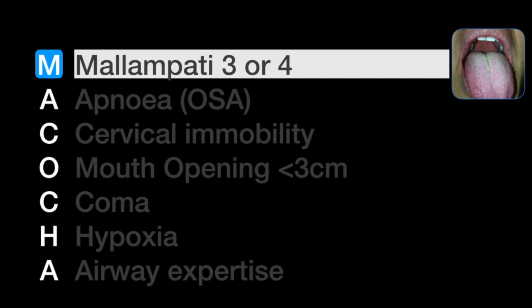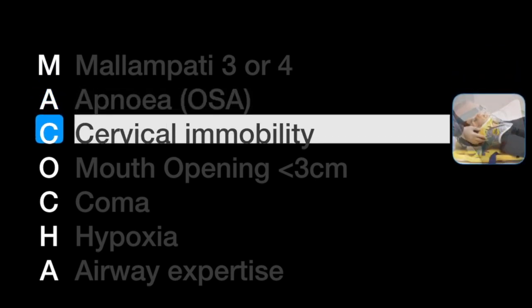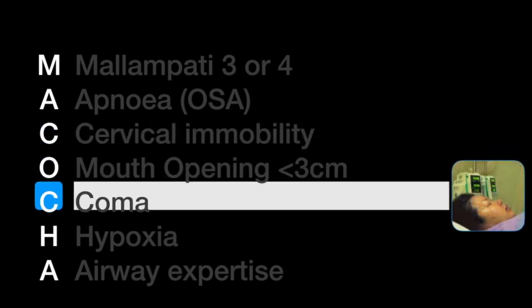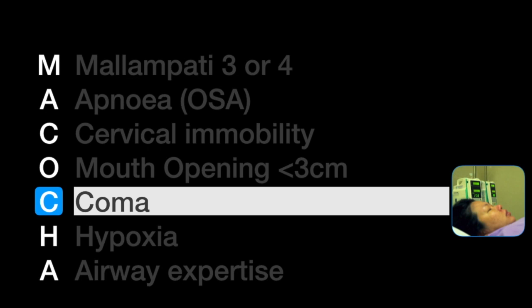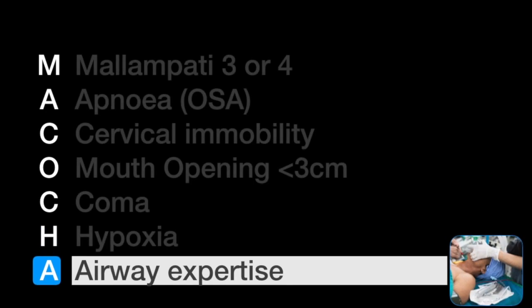The Makocha score components are: modified Mallampati class 3 or 4 scores five points; history of obstructive sleep apnea scores two points; cervical immobility scores one point; limited mouth opening scores one point; coma or GCS less than 9, severe hypoxemia, and a non-anesthesiologist operator each score one point. The score has a maximum of 12 points, with zero predicting an easy intubation and 12 points predicting a very difficult one.